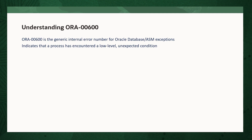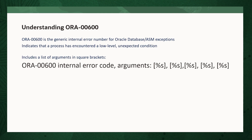ORA-600 is a generic internal error. It indicates that a process has encountered a low-level unexpected condition. This can typically mean that you've encountered a bug. The impact can vary from just being an annoyance that shows up in your logs once in a while to something major that brings the database down. When the error is logged, it includes a list of arguments in square brackets. The first argument can be useful to narrow down to known asserts, as it indicates the function logging the error. However, beware — if this is a commonly used function, there may be multiple different possible causes.